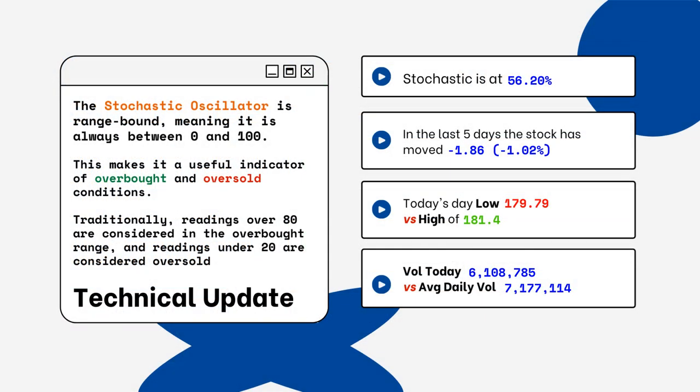You can see on the right side where the stochastic level is on this particular stock. This is only a technical update because you want to look for overbought and oversold conditions. Readings over 80% are considered overbought, and readings below 20% are considered oversold. You want to be aware of this when you're looking at a particular stock.